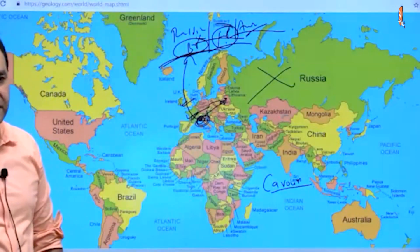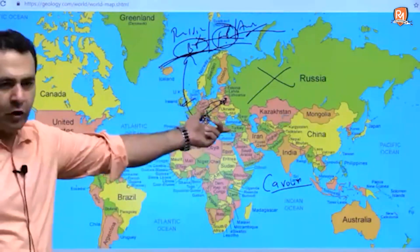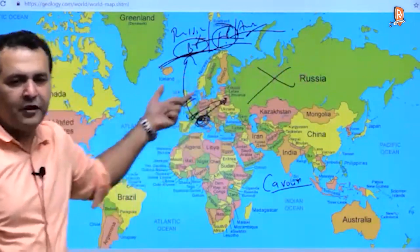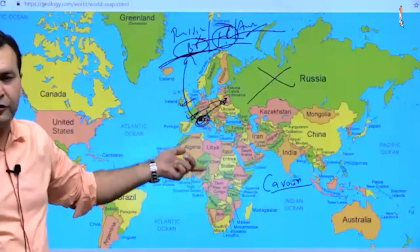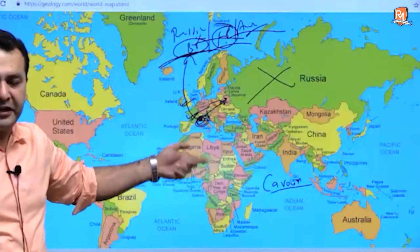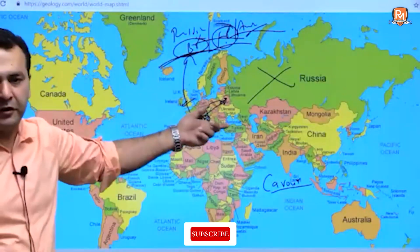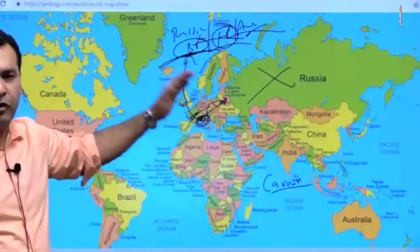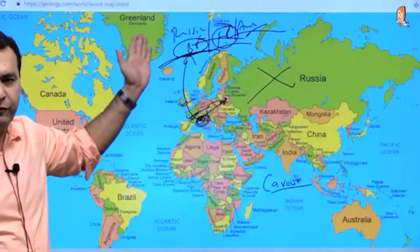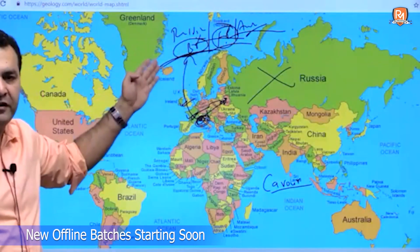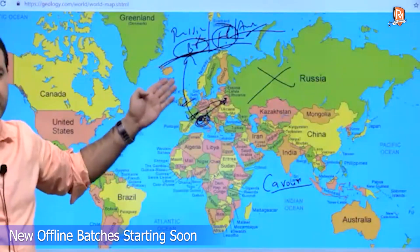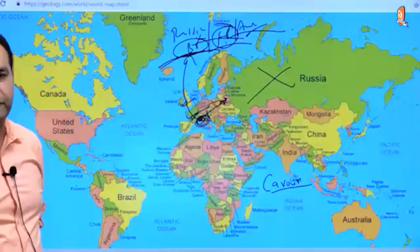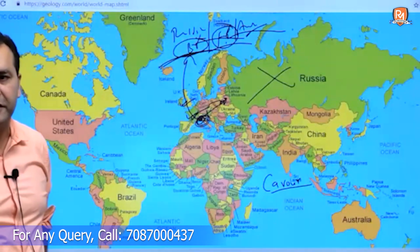Britain said it would be neutral and not interfere — whatever Piedmont-Sardinia wanted to do with Austria, they were free. France said it would help, but only if Austria attacked first. So Cavour earned a friend in France and a neutral Britain. A writer said: 'Italy was born out of Crimean mud.' There was a Crimean War where Italy had no role, but Cavour intentionally went there, got one friend and one neutral, and thus Italy would be born.